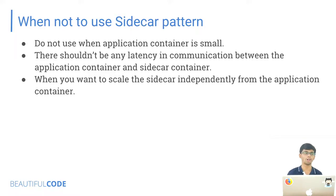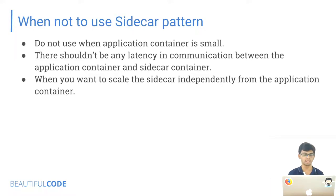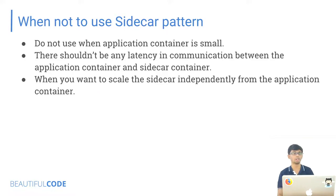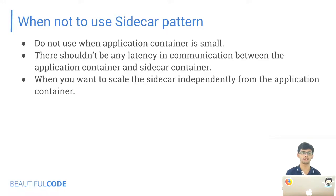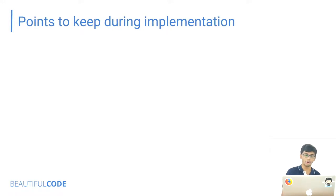If latency doesn't matter for your use case, like uploading log files, it makes sense to use the sidecar pattern. When you want to scale the sidecar independently from the application container, you shouldn't use this pattern, because in Kubernetes scaling is done at a pod level and not at a container level. So if you go with this pattern, you cannot scale them independently — you have to scale them together.